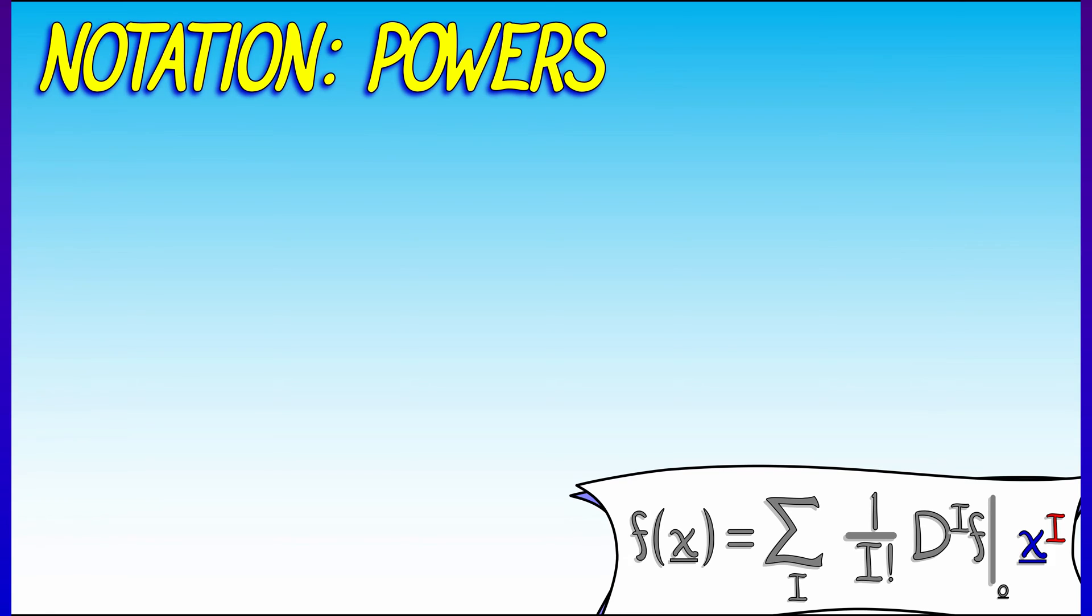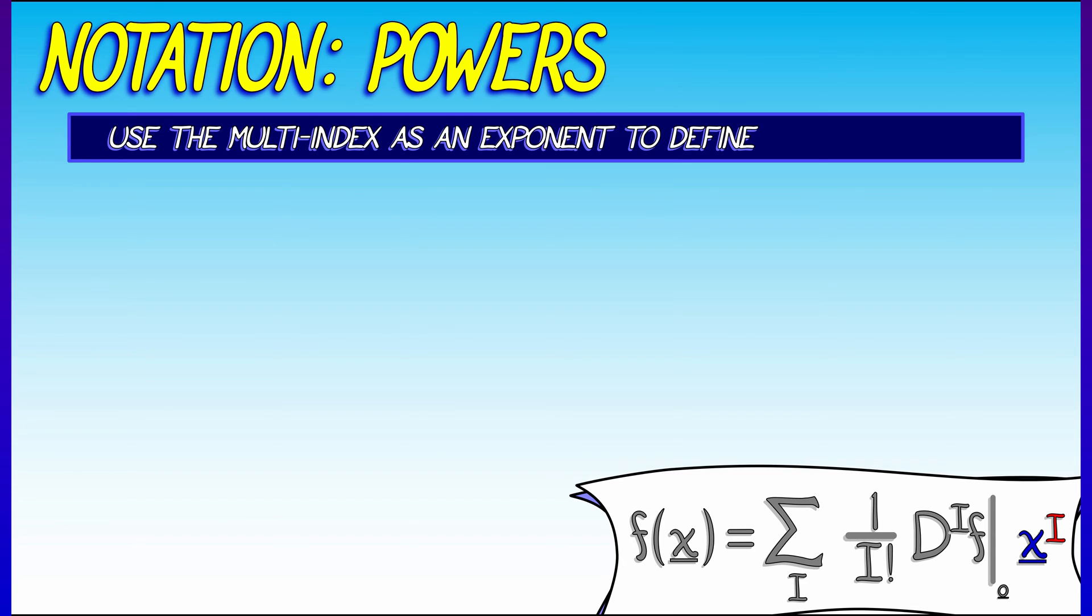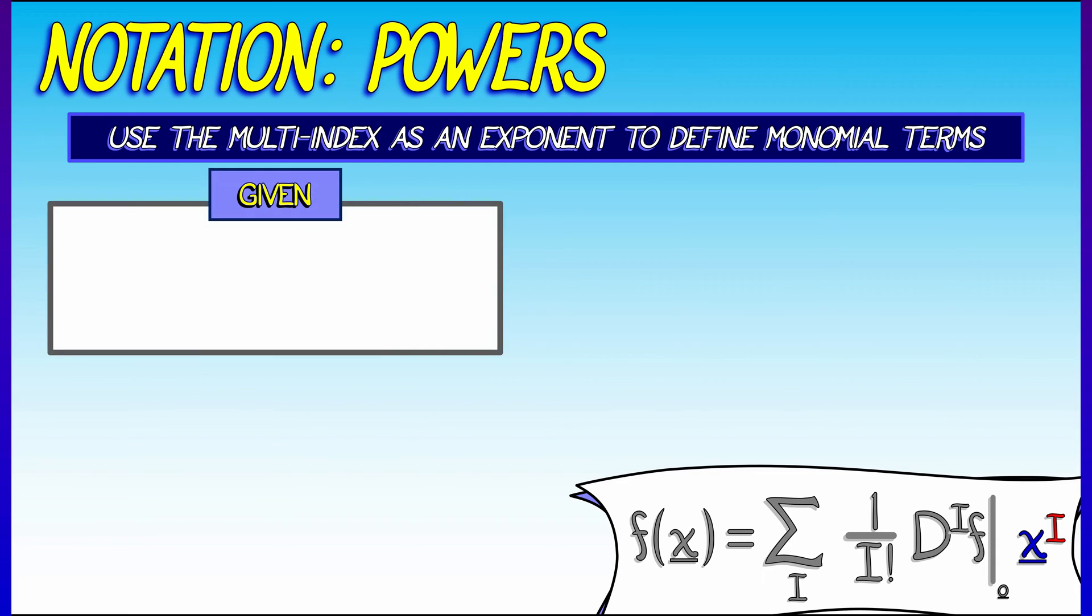Now, the first term in the Taylor series formula we're going to analyze is that monomial term, x to the i. We're going to use that multi-index as a power. How does this work? Given our variables, x1 all the way up through xn in that order, and a corresponding multi-index i,